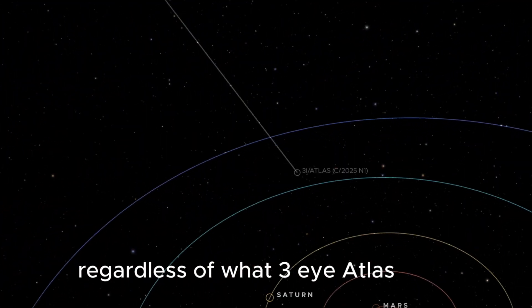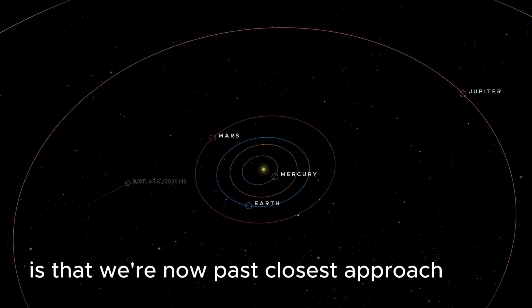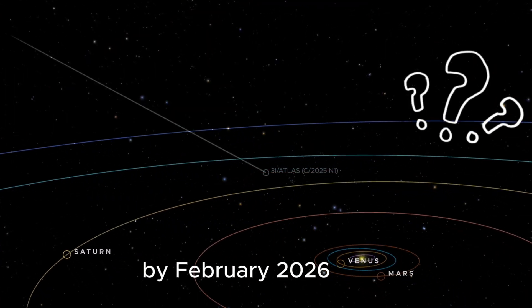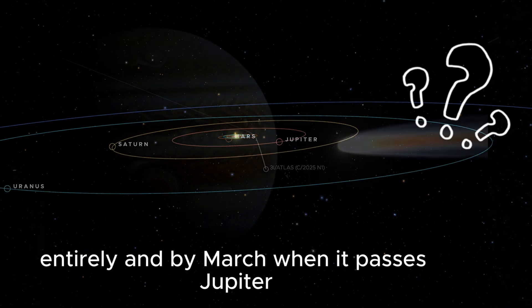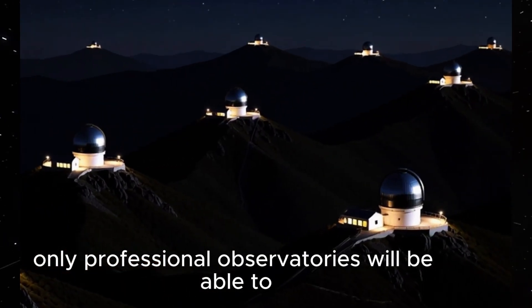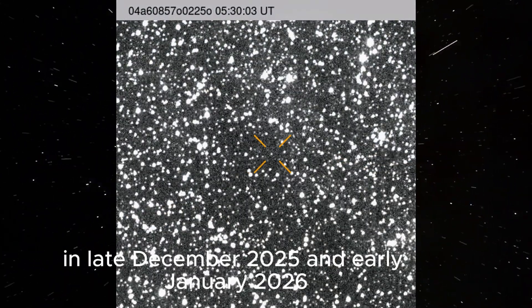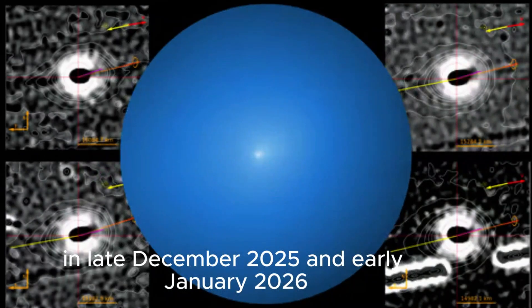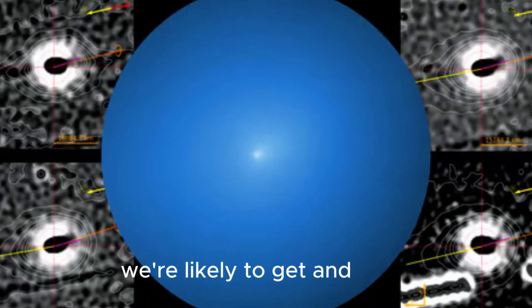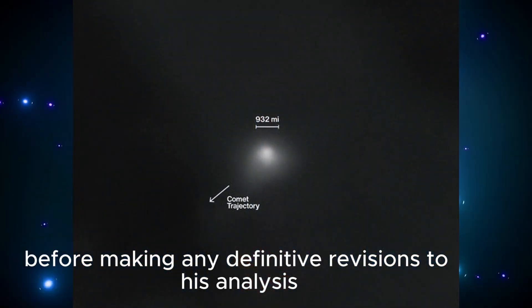What makes this especially significant is that we're now past closest approach. The observation window is closing. By February 2026, amateur telescopes will lose sight of the object entirely. And by March, when it passes Jupiter, only professional observatories will be able to continue tracking it. So the data being collected right now, in late December 2025 and early January 2026, represents the final set of high-quality observations we're likely to get. And Loeb is waiting for that complete data set to be processed before making any definitive revisions to his analysis.